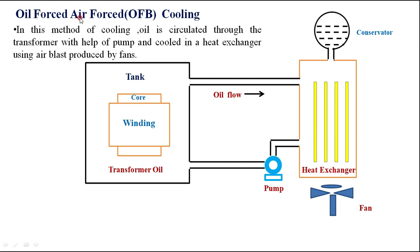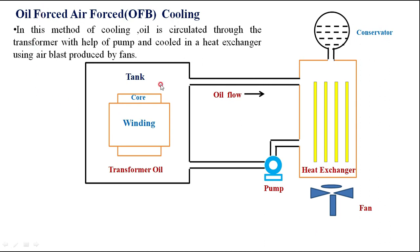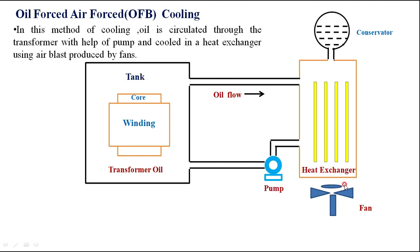The next method is oil forced air forced cooling. The improvement here is that instead of natural cooling of the transformer oil in the heat exchanger, forced air is blown onto the heat exchanger using an external fan to get a better cooling effect. In this method, oil is circulated through the transformer with the help of a pump and cooled in the heat exchanger using an air blast produced by fans.